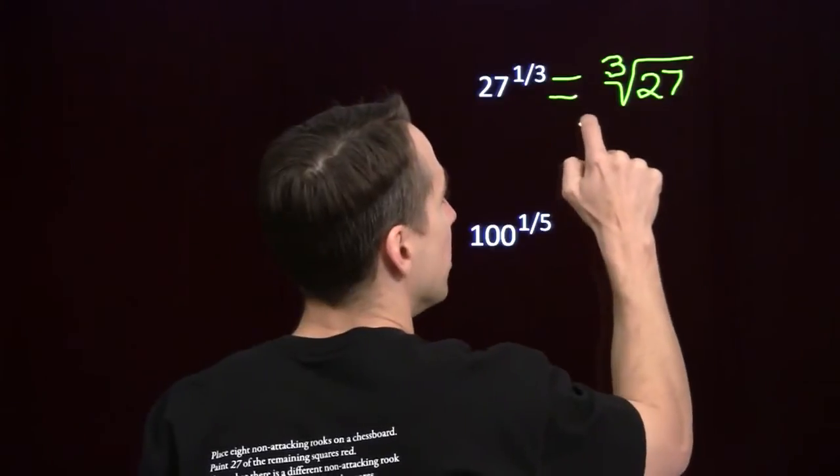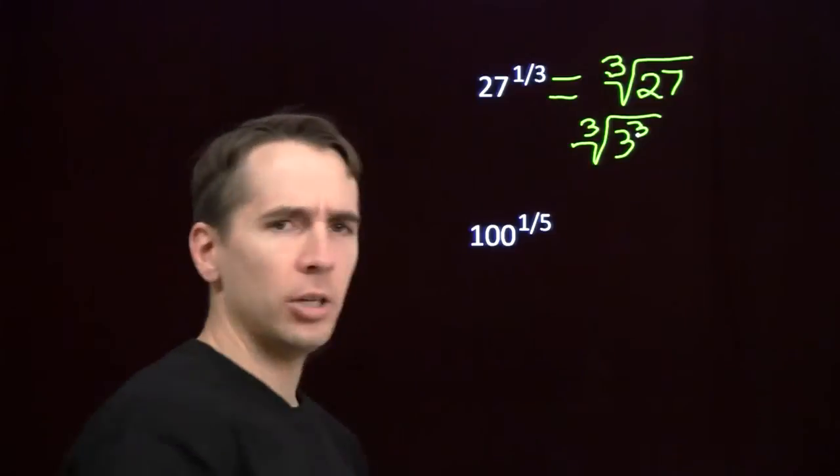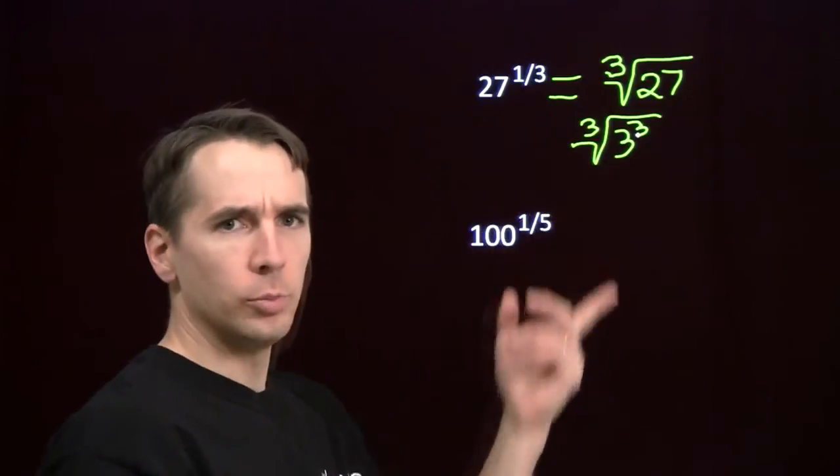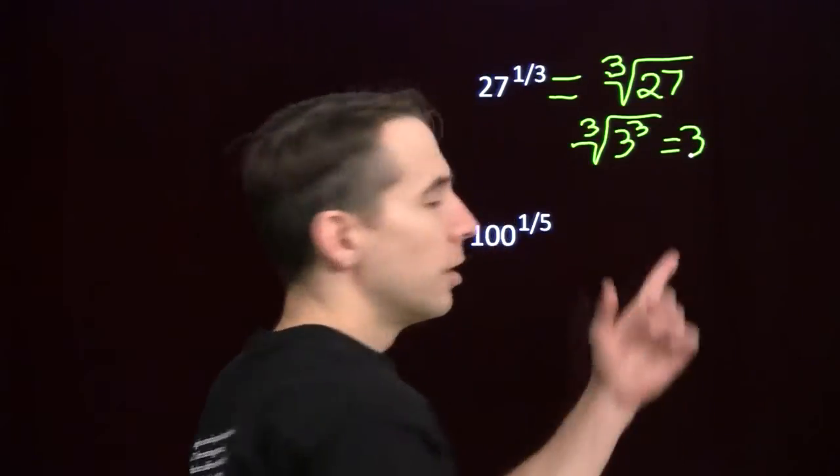Now, of course, 27 is 3 cubed, so I can write this as cube root of 3 cubed, and, well, the number you cube to get 3 cubed is 3, so this is just 3.